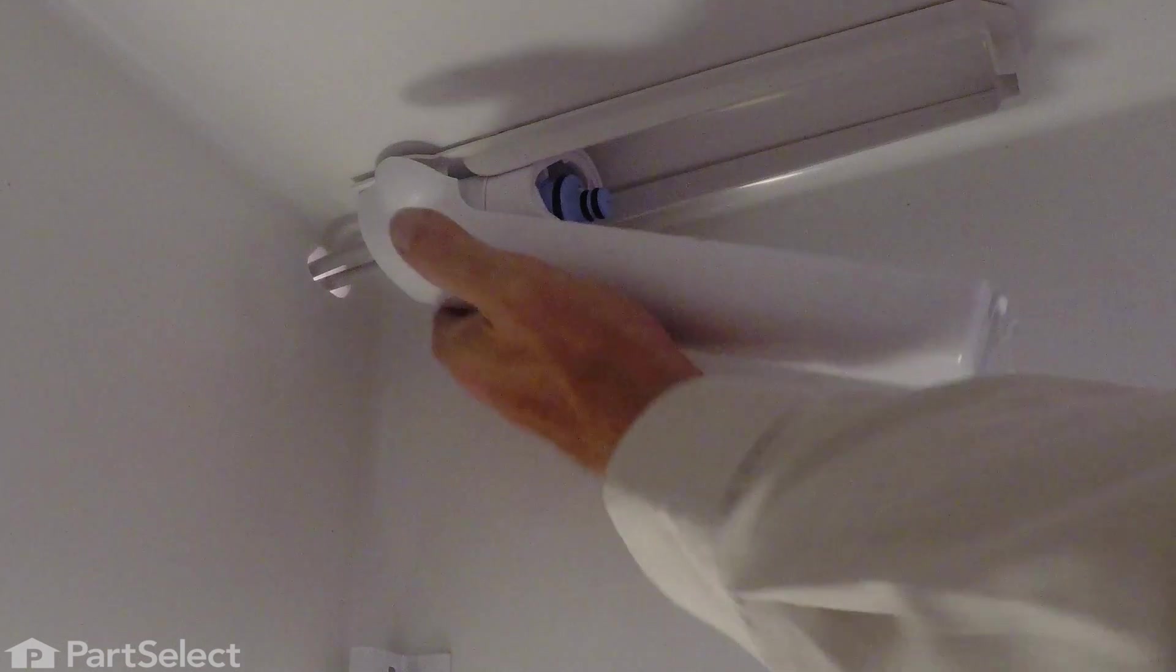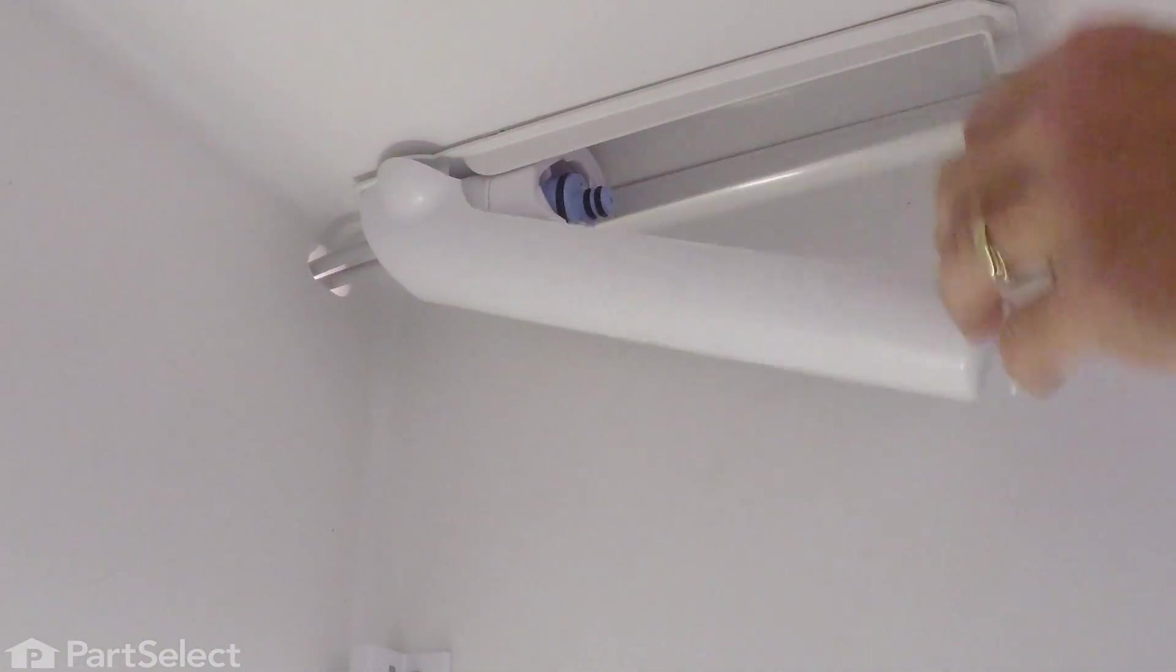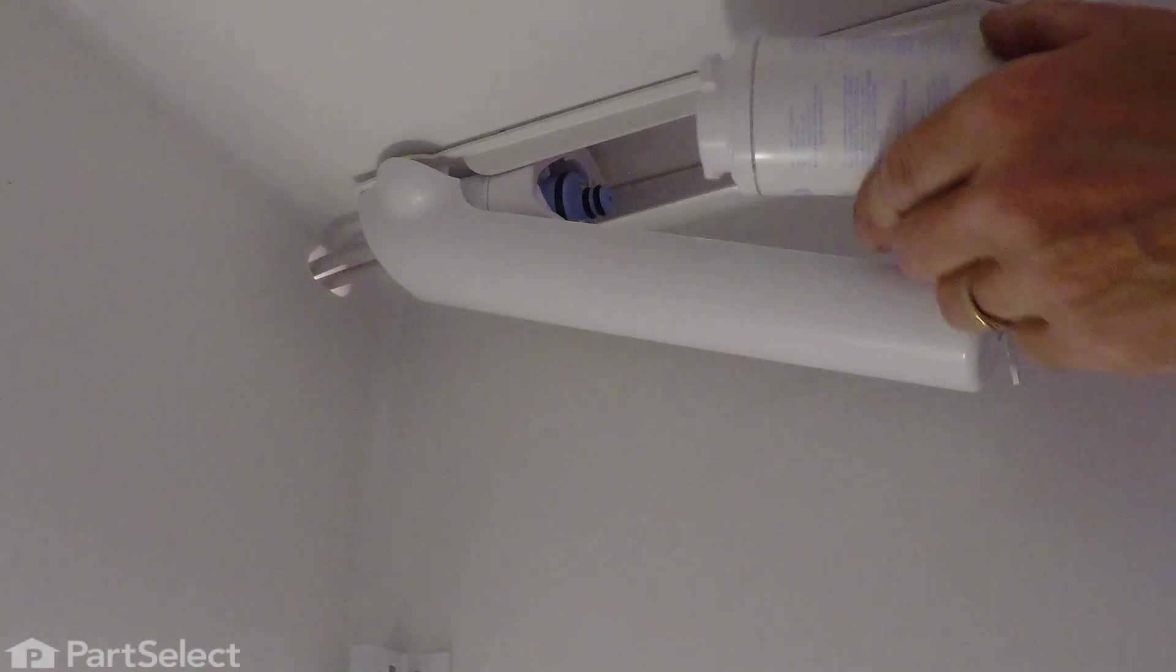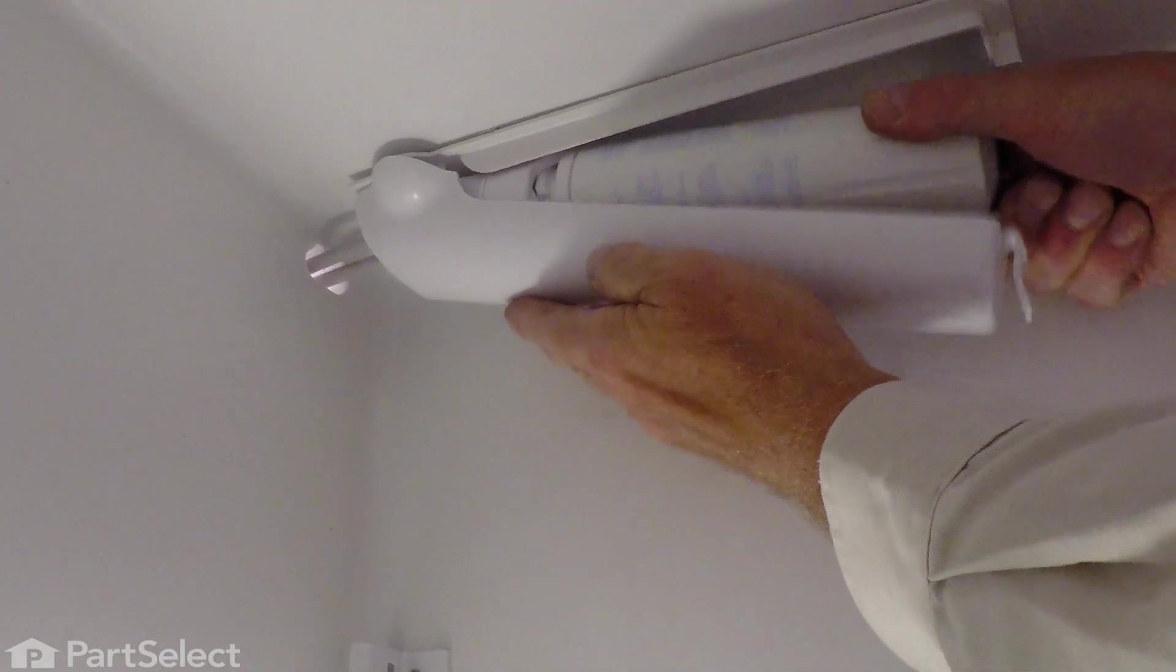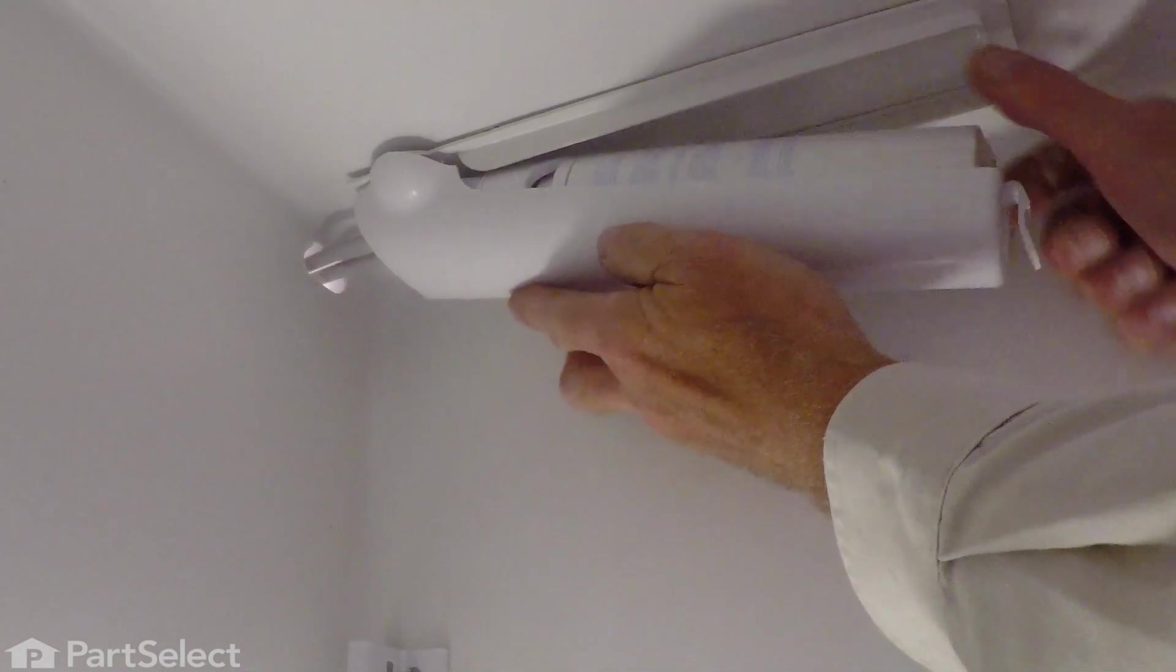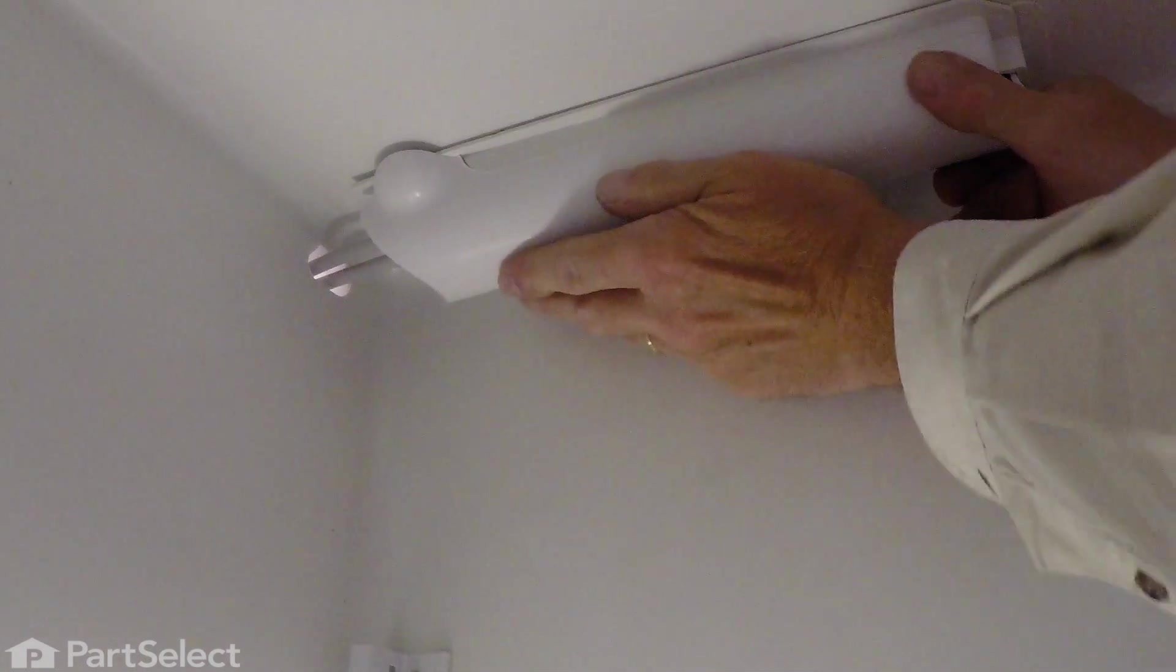Again, we'll make sure that we have that housing snap into the ceiling properly. We can then put our water filter back in. Twist it clockwise until it locks in place. We'll snap that whole housing back up to the ceiling.